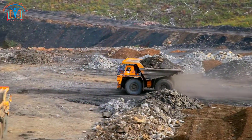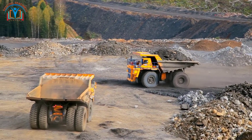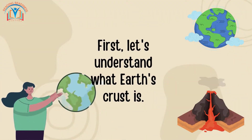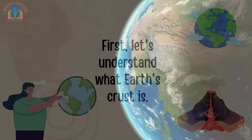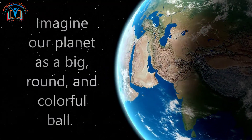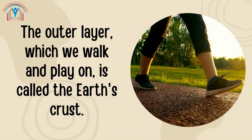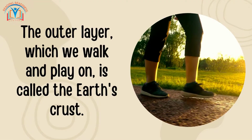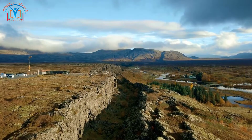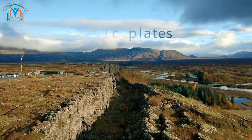The crust is made up of different types of rocks that are constantly changing. First, let's understand what Earth's crust is. Imagine our planet as a big, round, colorful ball. The outer layer, which we walk and play on, is called the Earth's crust. Earth's crust is like a giant puzzle made up of pieces called tectonic plates.